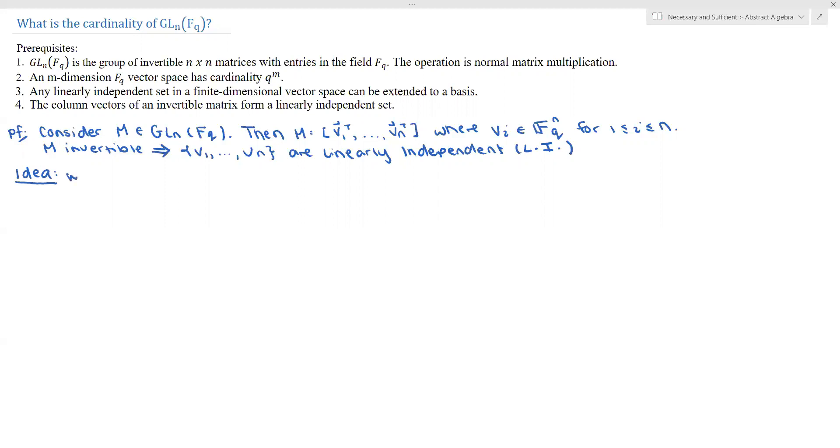But here's the idea of the proof. We will build possible n by n matrices in GLN over FQ and count how many options we have for each n. So this is our idea and let's formalize it.